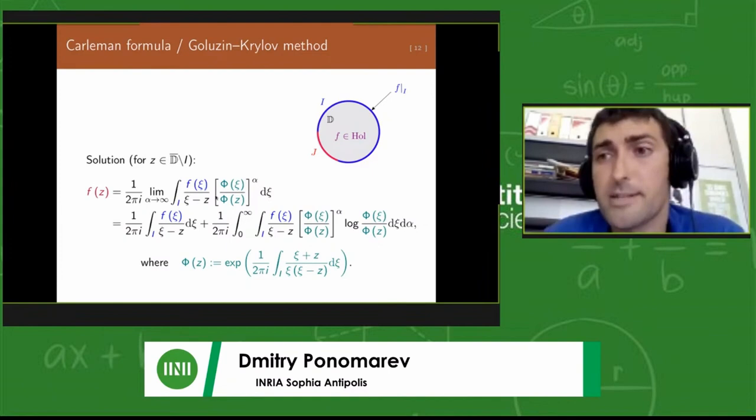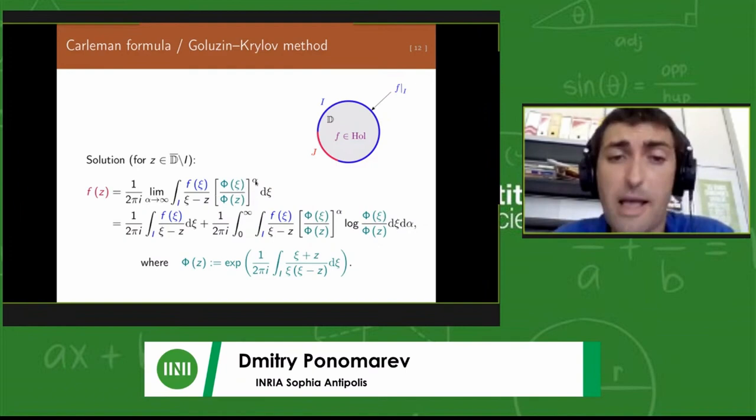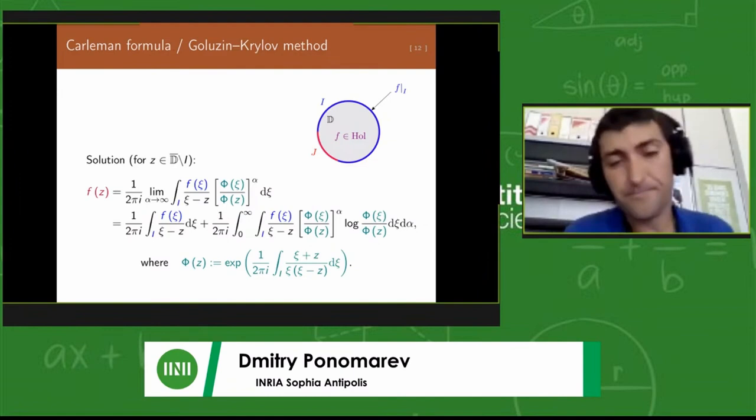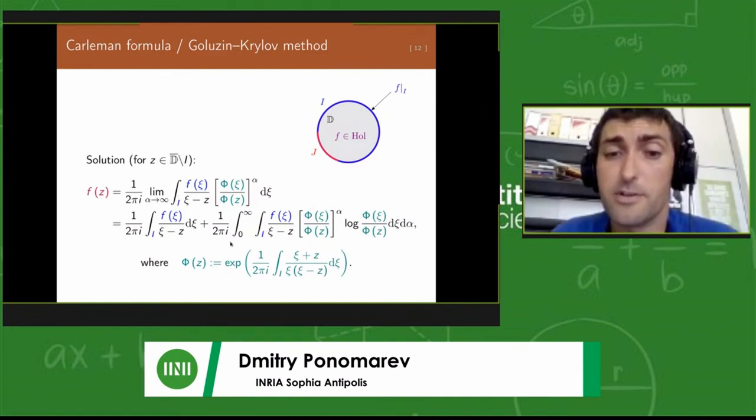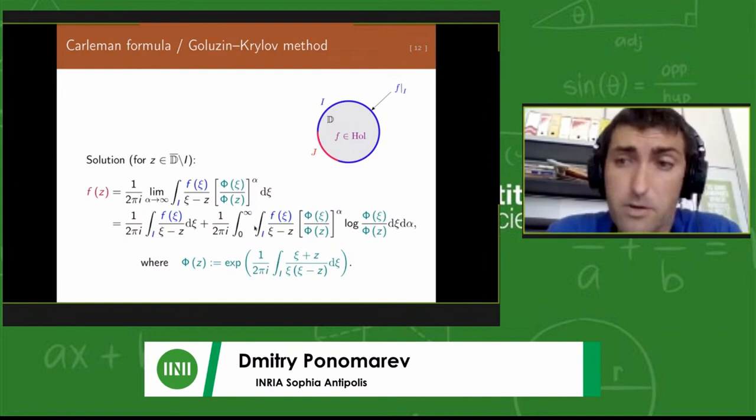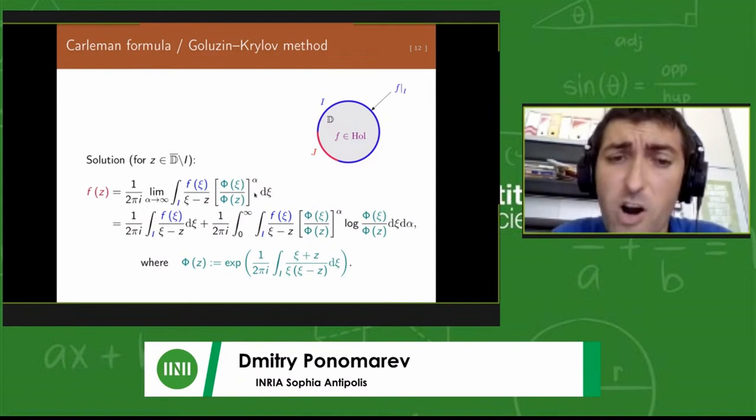The name of this algorithm is the Carleman method or Carleman formula. This is an explicit process or explicit formula for how you could capture f inside of the domain of analyticity in terms of its boundary values on i. It's essentially based on integration against some auxiliary function which contains parameter alpha. Then this parameter will be taken to infinity.